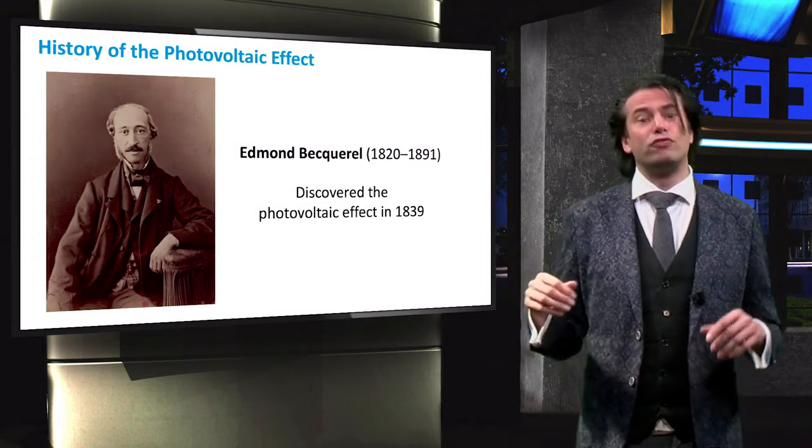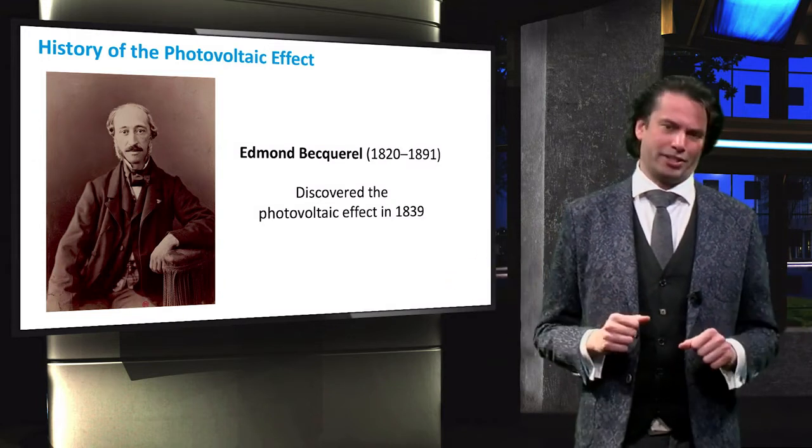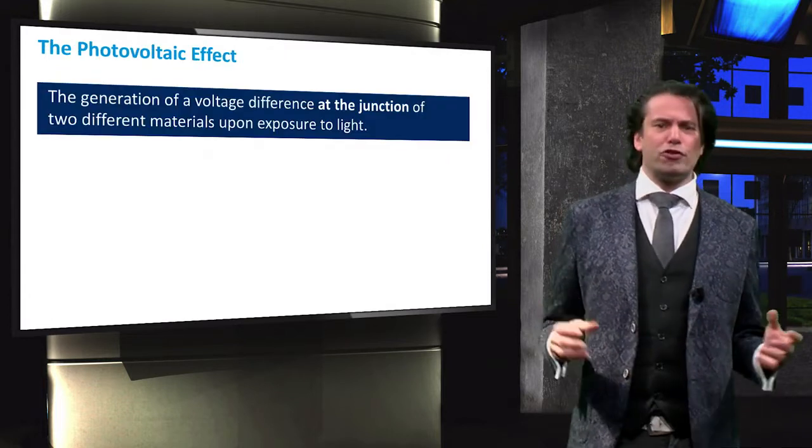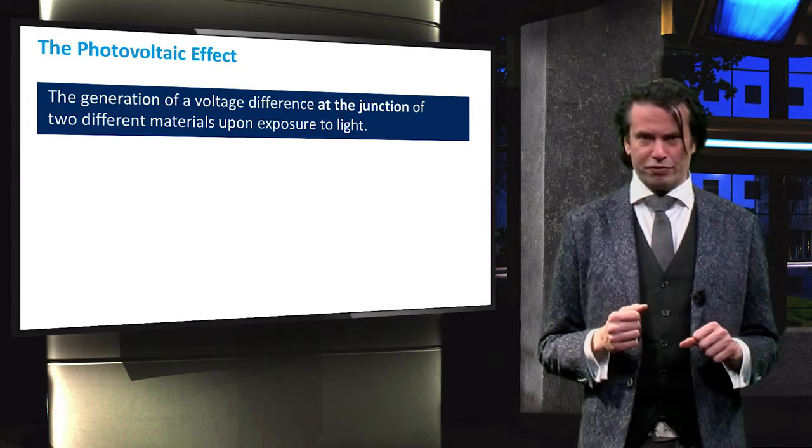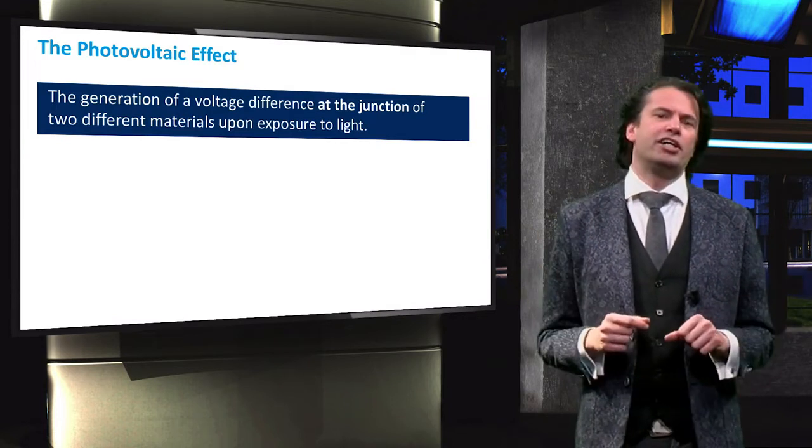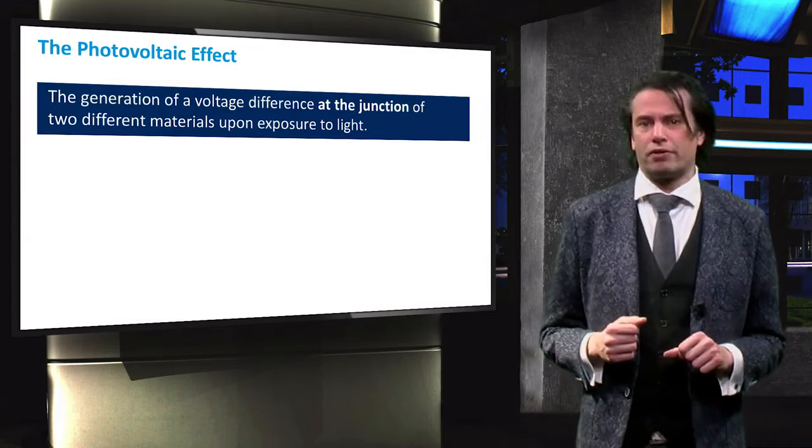This device was the first to convert light into electricity. The photovoltaic effect occurs through the generation of a potential difference at the junction of two different materials in response to electromagnetic radiation.